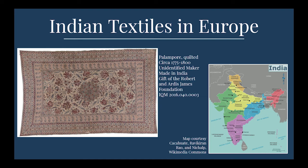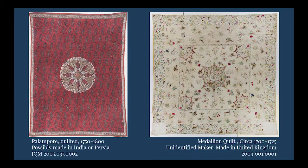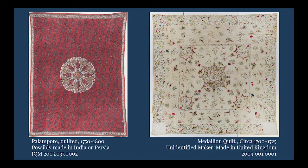This, combined with cotton's comfortable feel and the ease of washing, led to such extreme popularity that both England and France banned imports of Indian textiles in an effort to save their silk and wool industries. Indian palimpours — printed and painted textiles that were used for table coverings, floor coverings, and prayer rugs — were some of the earliest Indian textiles to reach Europe.